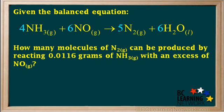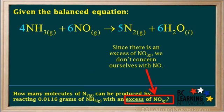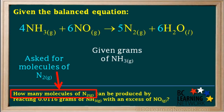We start by finding out what we're given and what we're asked for. We're given the mass, or the grams, of NH3. And since there's an excess of NO, we don't concern ourselves with the NO. We know that there's more than enough to react with all the NH3 we have. We're asked for the number of molecules of N2.